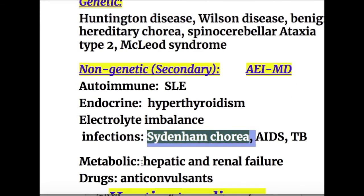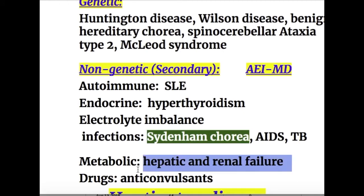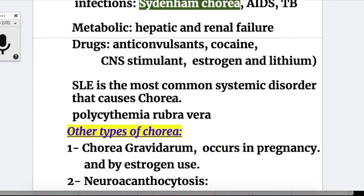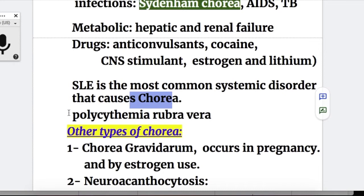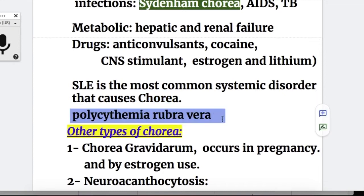MD in the mnemonic: M for metabolic causes such as hepatic and renal failure. D for drugs — anticonvulsants, cocaine, CNS stimulants, estrogen, and lithium are drugs that may cause chorea. SLE is the most common systemic disorder that causes chorea. Polycythemia rubra vera also causes chorea.